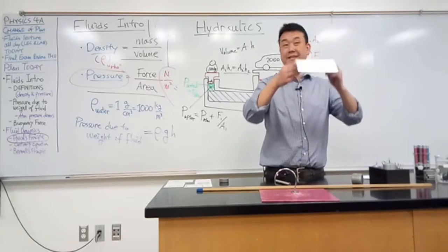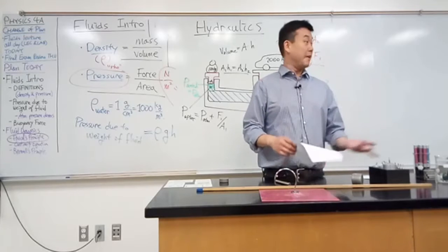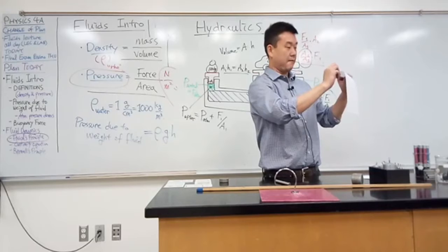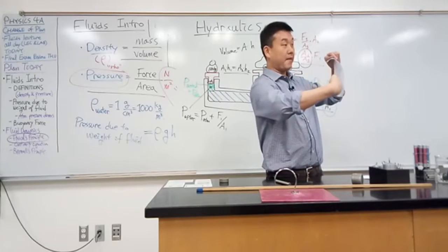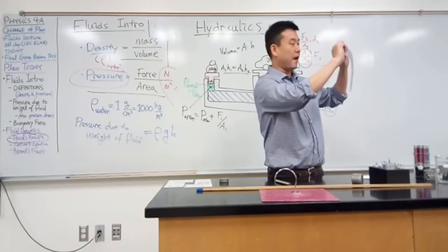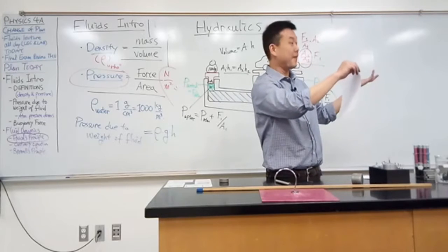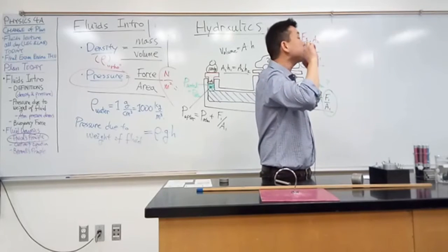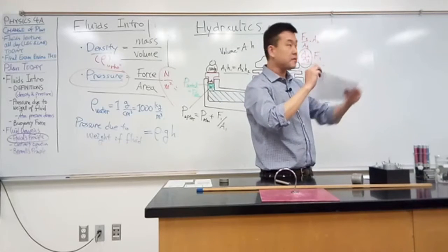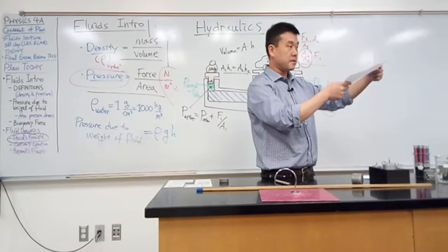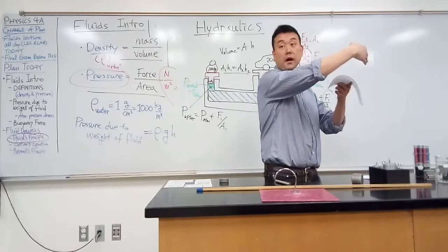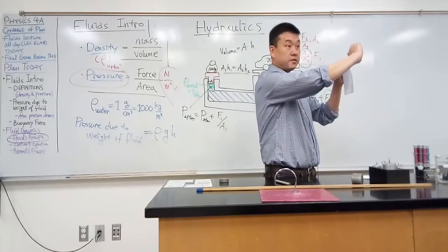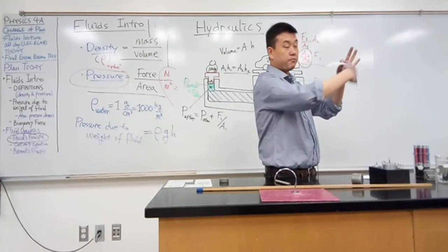Let me start with a little demo. This is a popular demo dealing with Bernoulli's Principle. I have this flat, bendy piece of paper, and I can make this paper bend up without touching it. One way is to blow into it, but what I'm going to do is make it bend up by blowing air over it. When I do this, it comes up. This is a result of Bernoulli's Principle: when you have a fluid moving at some velocity, there's a related difference in pressure. Passing fluid here lowers the pressure in this region; pressure here is higher, so that difference in pressure pushes the paper up.